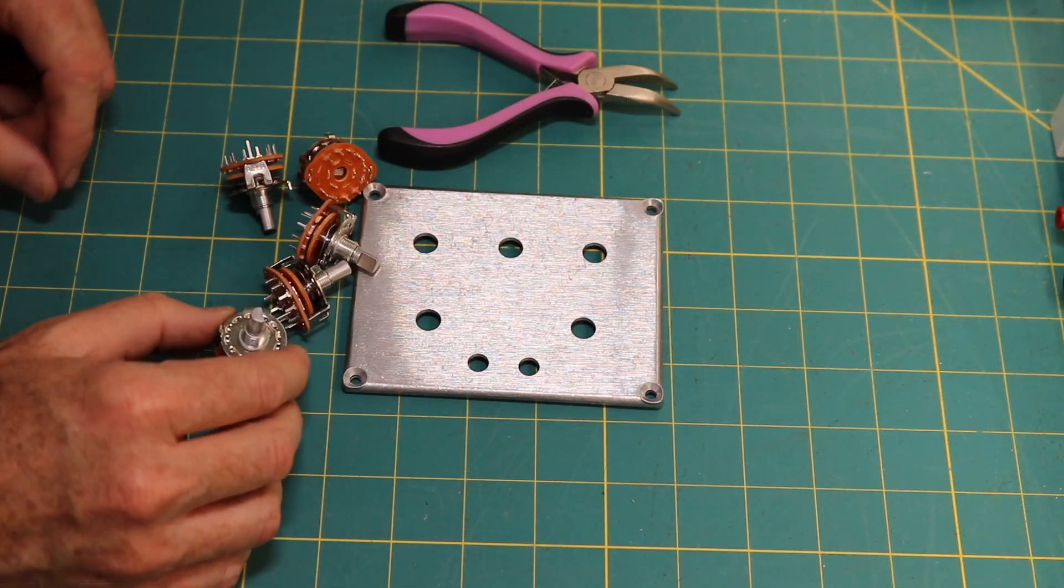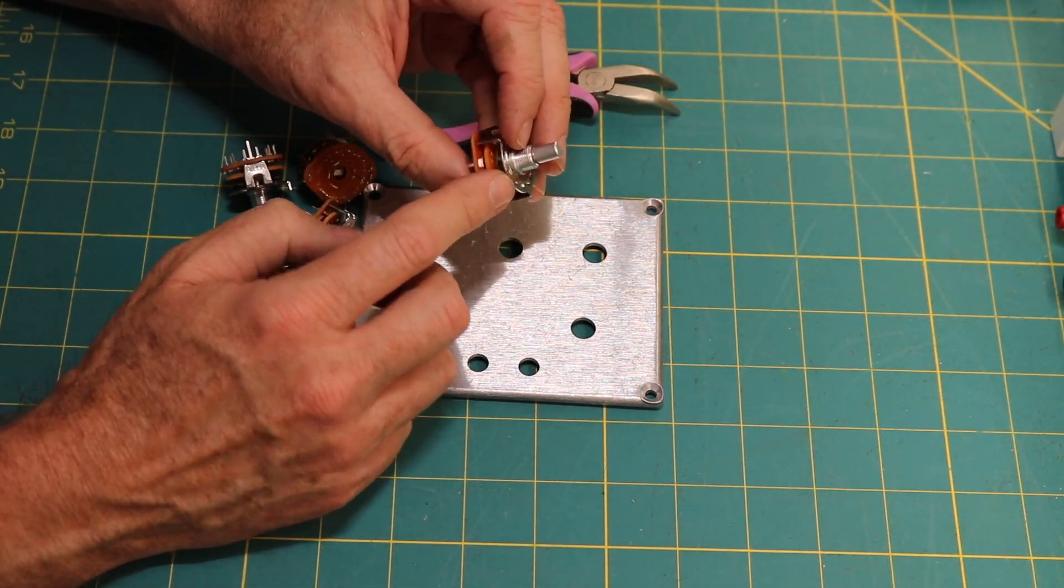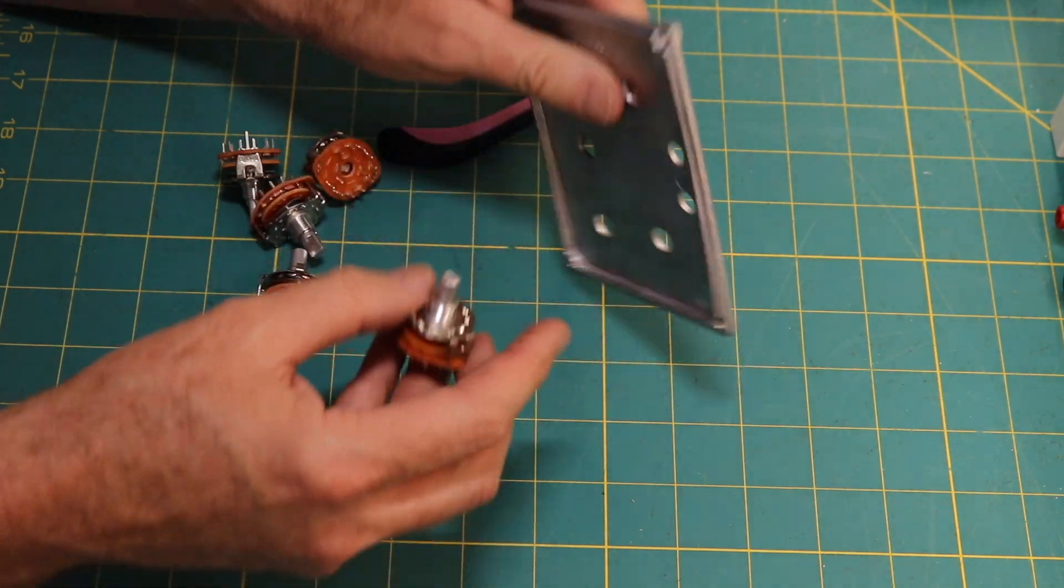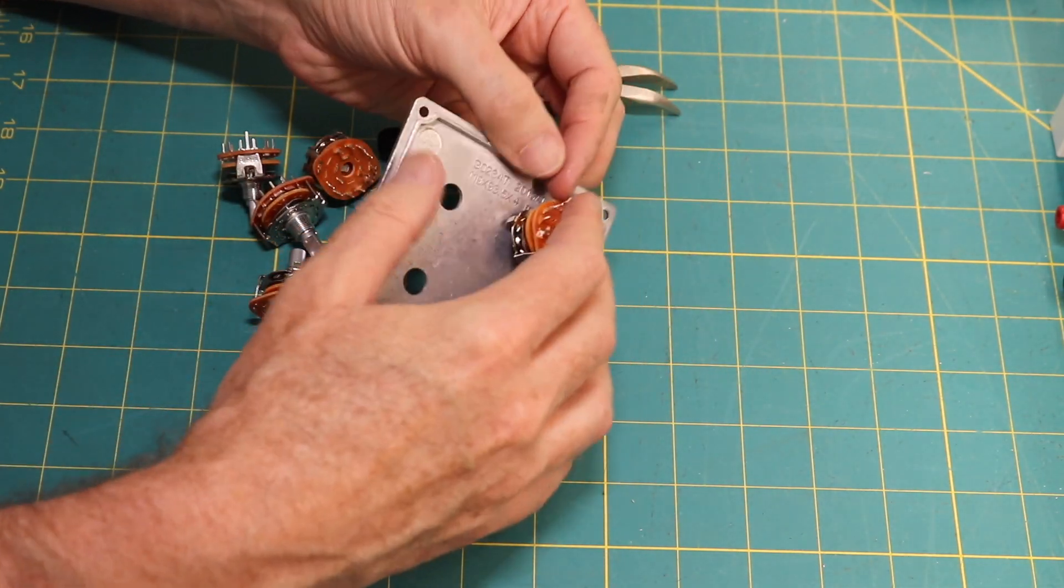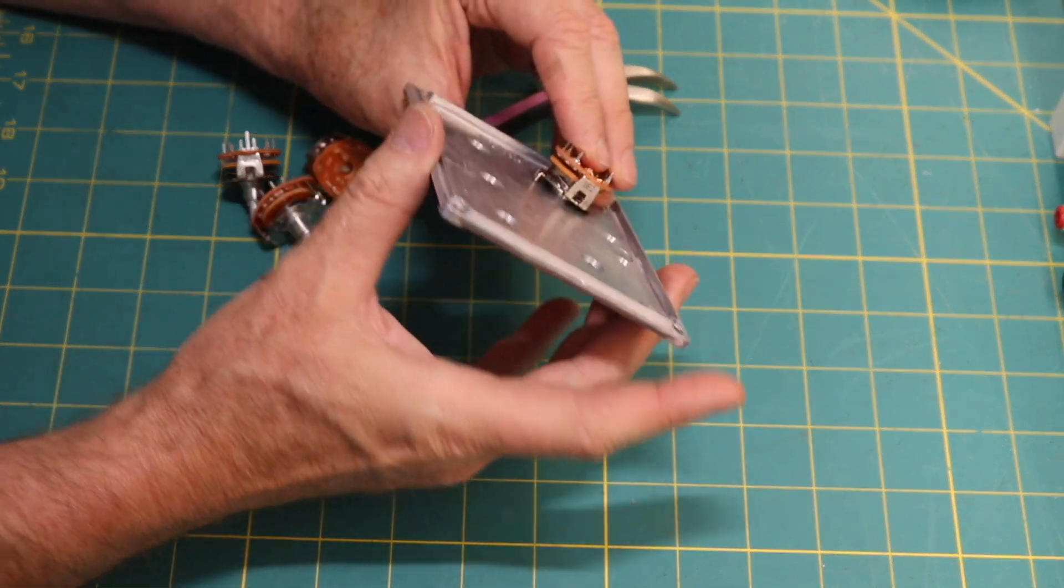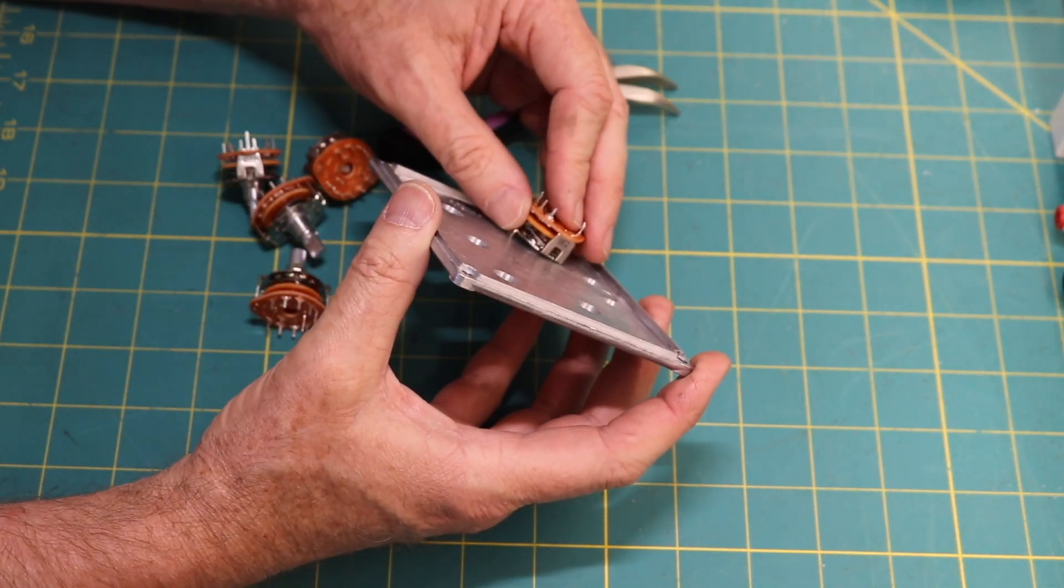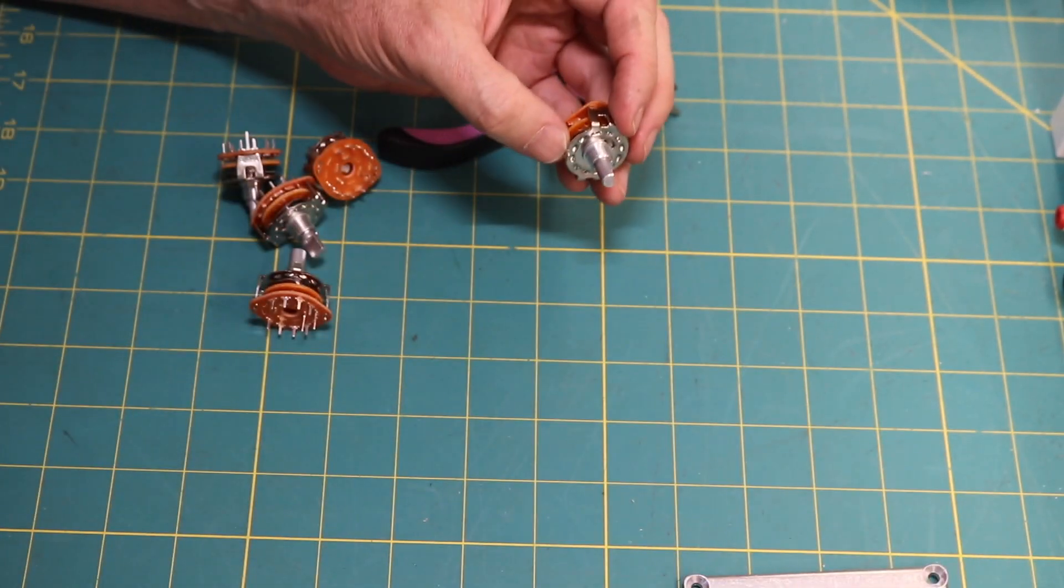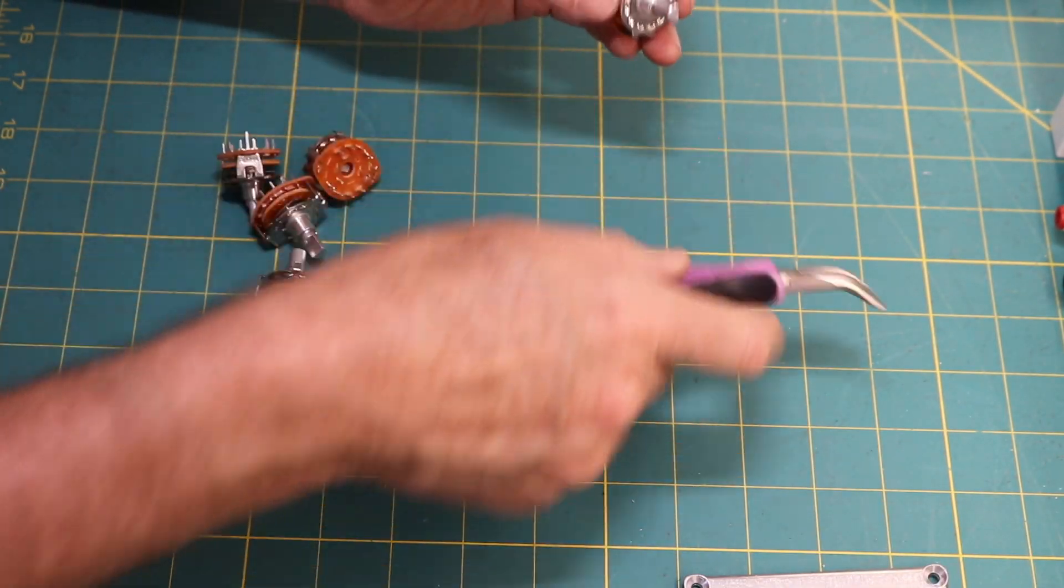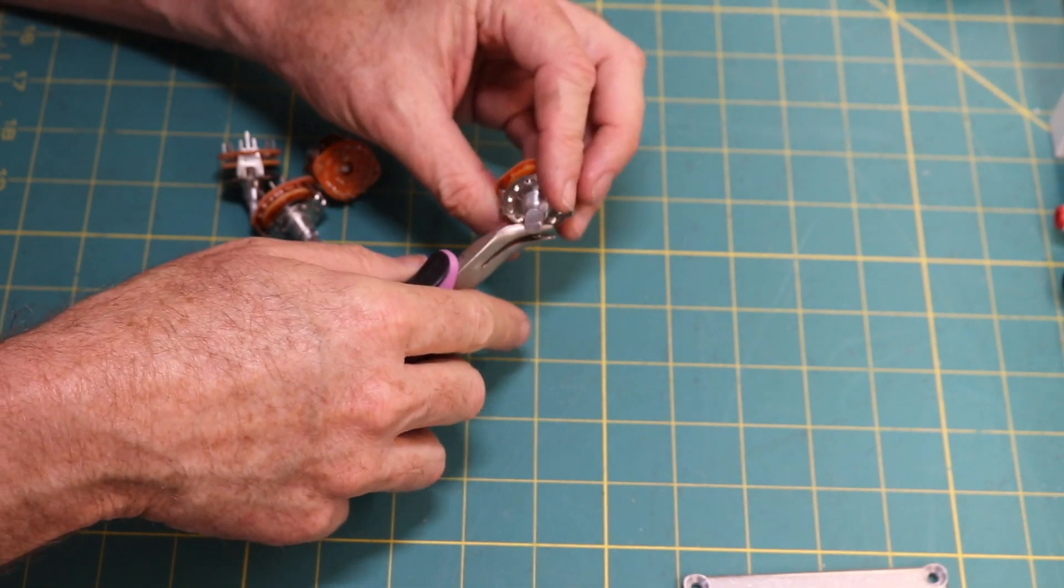The next step is to bend these little locating tabs flat. They get in the way. Let me try and bring it in. You can see how that stops it from laying down flat. I'm going to bend those before I solder them. Seems like an easier time now than later. So that's what we'll do next.